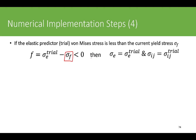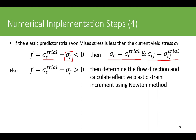If the trial equivalent stress minus the flow stress sigma_f is less than zero, then the stress is below the current yield stress and we are in the elastic zone. We update the stresses and the stress tensor equal to the trial values. Otherwise, if it is greater than zero, we must determine the flow direction and calculate the effective plastic strain using the Newton method.